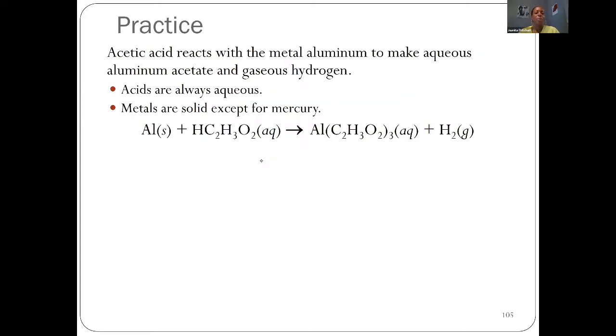Let's try another example. Acetic acid reacts with the metal aluminum to make aqueous aluminum acetate and gaseous hydrogen. Acids are always aqueous. So we have acetic acid, aluminum metal as aluminum solid, and it's producing aluminum acetate. This three is here because of the charge from aluminum, and the two is here because hydrogen is a diatomic element when by itself.